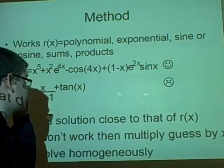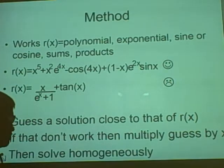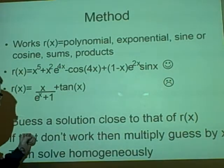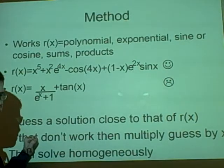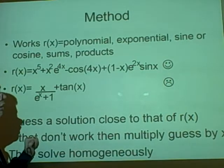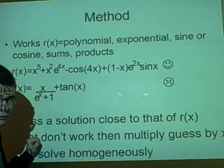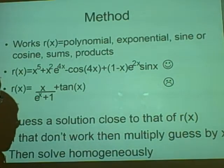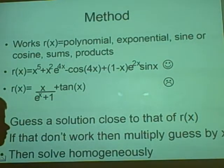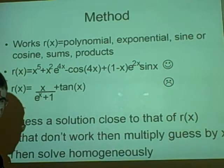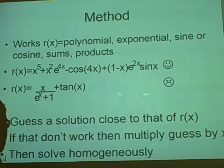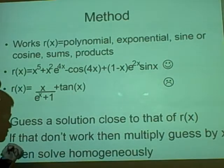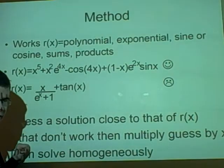The method is to first of all guess a solution. I hate guessing, but that's the method. So we guess something that is close to that of r(x). Say r(x) was sin(x), we could guess alpha*sin(x) as our solution. If that doesn't work, if you get 0 equals 0, then choose a different one. All you do is use the same one that you chose, and we times that by x. So alpha*x*sin(x) would be used. Then you solve it homogeneously, which is just the same way that we did it last lecture.